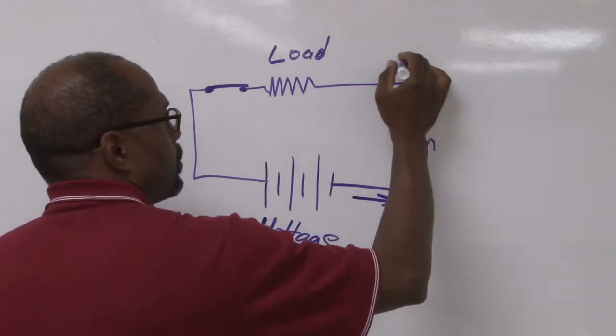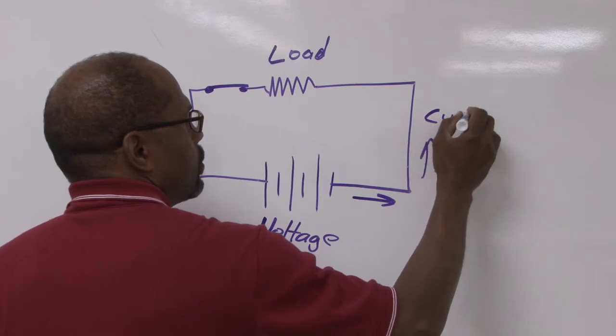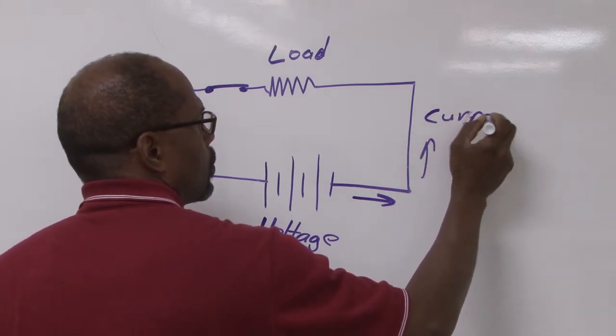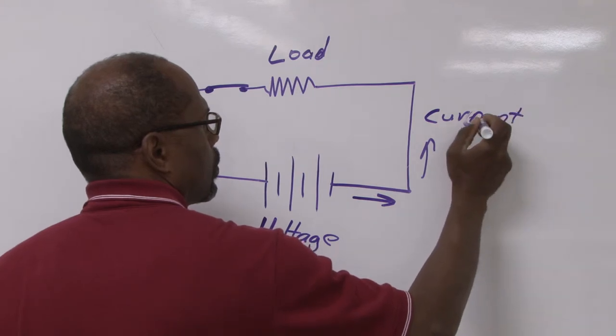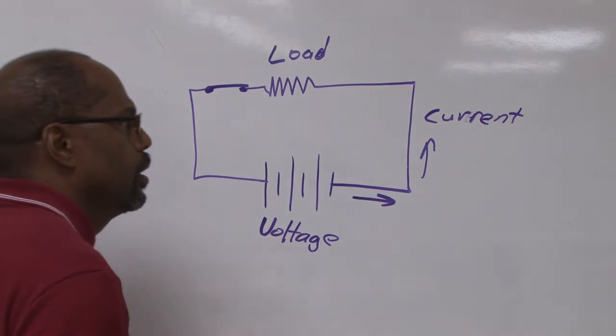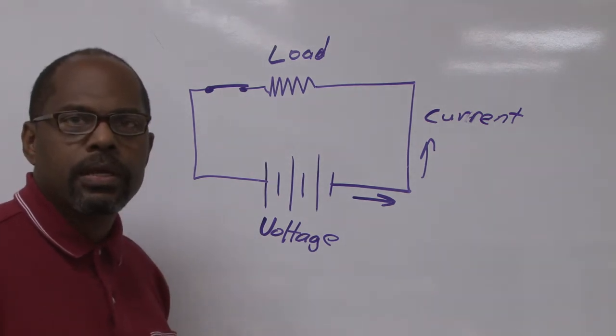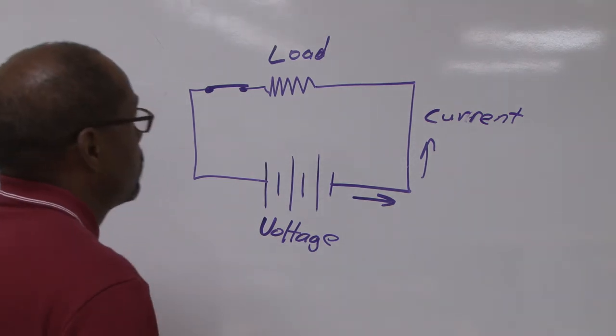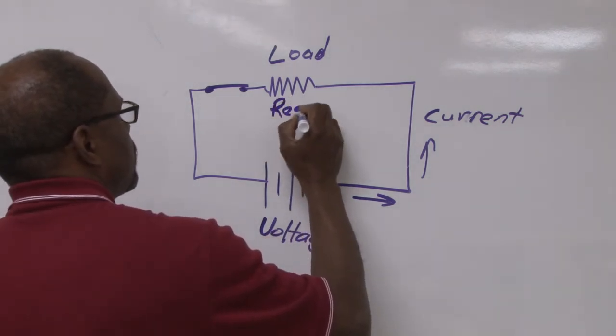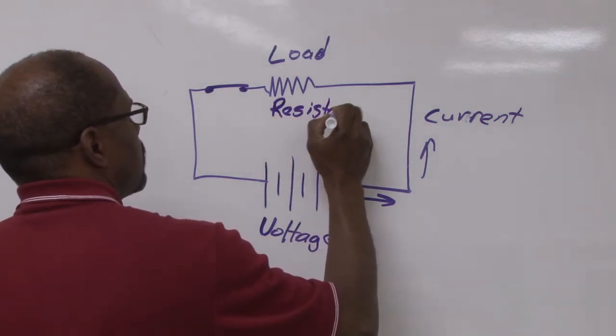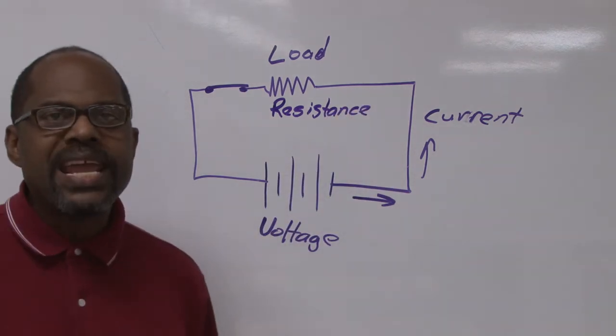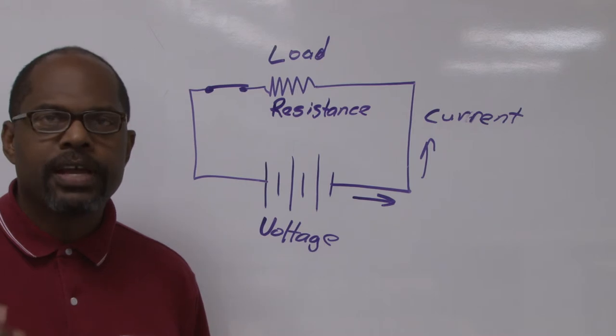Current is the movement and speed of the electrons. Resistance is the part that impedes the flow of electrons.